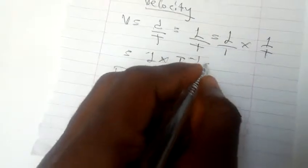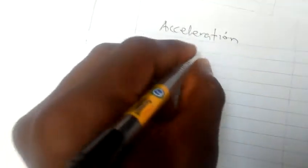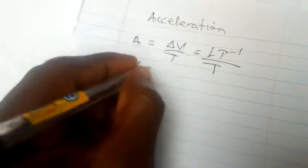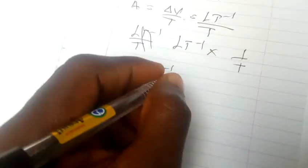Let's move further to acceleration. Acceleration is given by change in velocity over time. For velocity, we've gotten L T minus one, so it will be L T minus one times one over T. Now we'll apply the law of indices here. Please read up on the laws of indices in mathematics. It will be multiplied by T minus one.